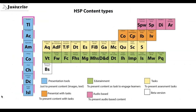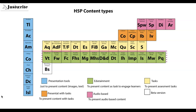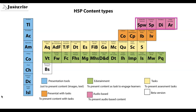It's a periodic table kind of structure where all the blue color content types can be used to present images and text. The green color content types are to present content and as a task to engage the learner. The yellow ones are to present only assessment tasks. The orange highlighted ones are content with tasks, meaning various tasks can be included while presenting the content. The pink shaded ones are audio based content types. And the one below without color is a branching scenario, which is still in beta version.